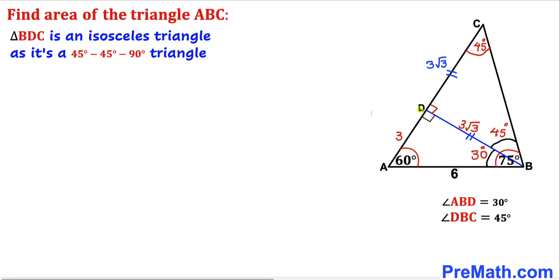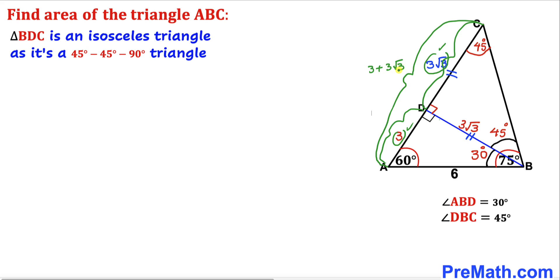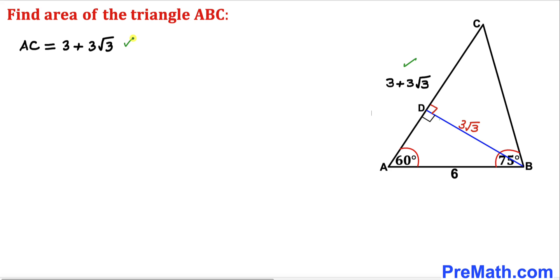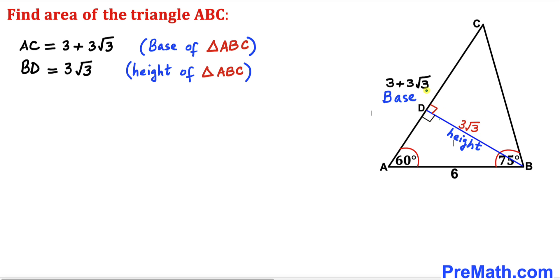We know that side AD is 3 units and side DC is 3 times square root of 3. So the whole length AC is going to be the sum of these two quantities: 3 plus 3 times square root of 3. AC is 3 plus 3 times square root of 3. Moreover, side BD is 3 times square root of 3. Here we can see that AC is our base and BD is our height of triangle ABC.